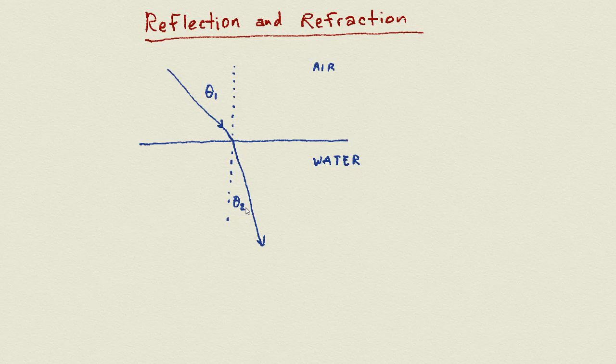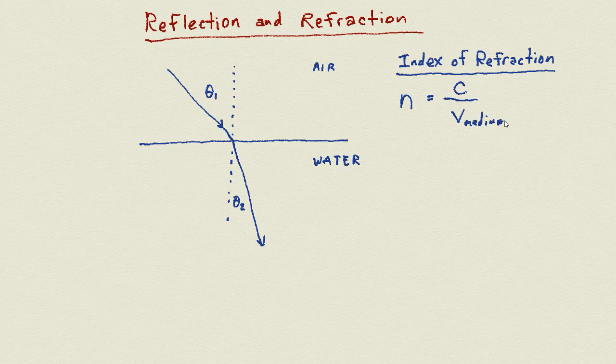So the first thing we have to understand and talk about is this idea known as the index of refraction. The index of refraction, we use the symbol n, and what it is is the ratio of the speed of light in a vacuum, three times ten to the eight, to the speed of the light in the medium that we are traveling through. Every medium that is transparent that allows light to pass through it slows light down. Now again, we went way into that on the conceptual video. This is the mathematical relationship.